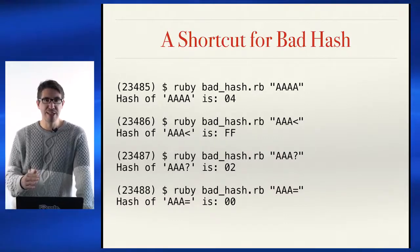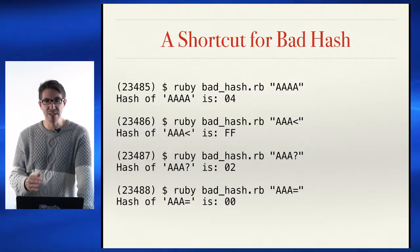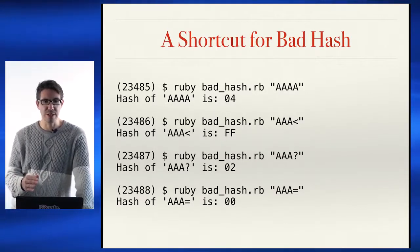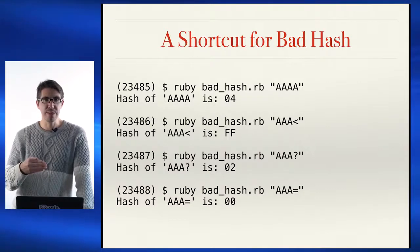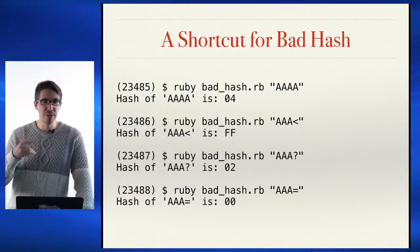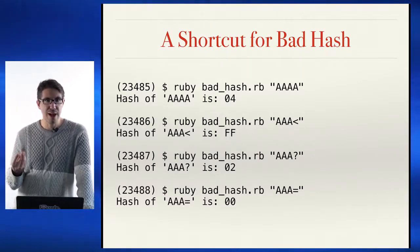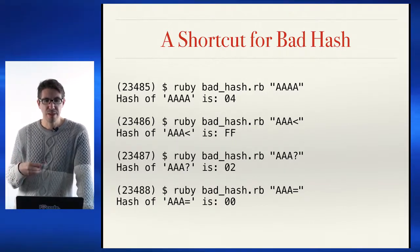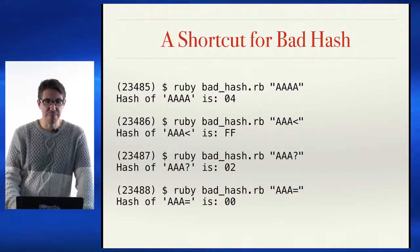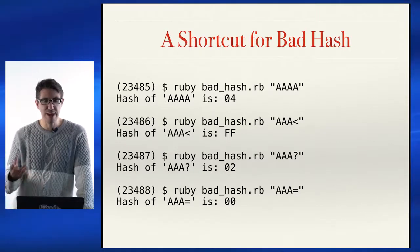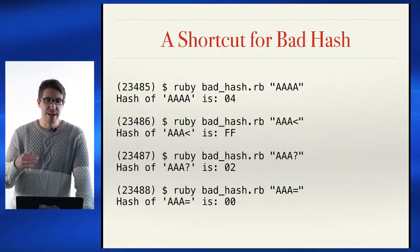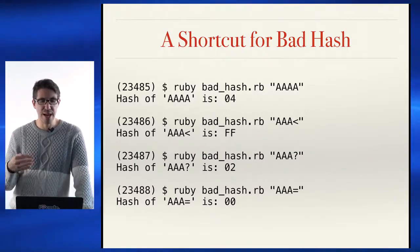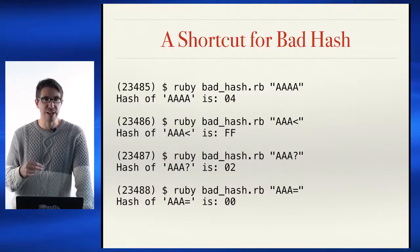I change that last A to a lower ASCII value character — the less-than character — and I see that's FF. But since we use modular arithmetic, if I just add one more value and increment that by one, then I will get zero. I did a question mark which was a little bit higher, and subtracting two gives me the equals sign. So AAAA= gives me a hash of 00.